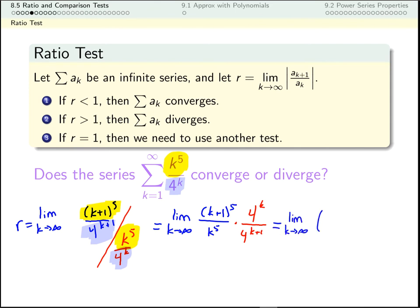The reason it's nice to put these like terms together is that usually we can simplify. So k plus 1 to the fifth over k to the fifth, I can write as k plus 1 over k to the fifth. And 4 to the k over 4 to the k plus 1, I can divide the top and the bottom by 4 to the power k, and I just get a quarter.